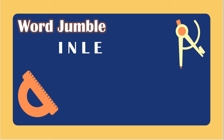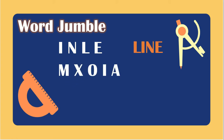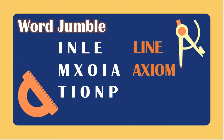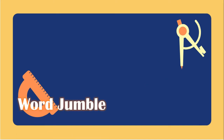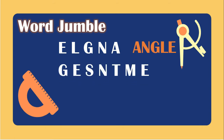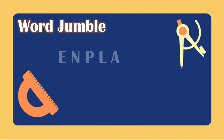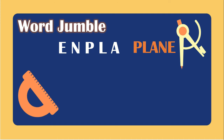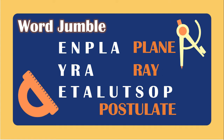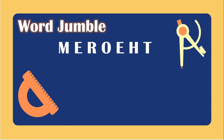The first word is 'line.' The second word is 'action.' The third is 'point.' The fourth is 'angle.' The fifth is 'segment.' The sixth is 'plane.' The seventh is 'ray.' The eighth is 'postulate.' The ninth is 'theorem.' And for the last one, we have 'measure.'